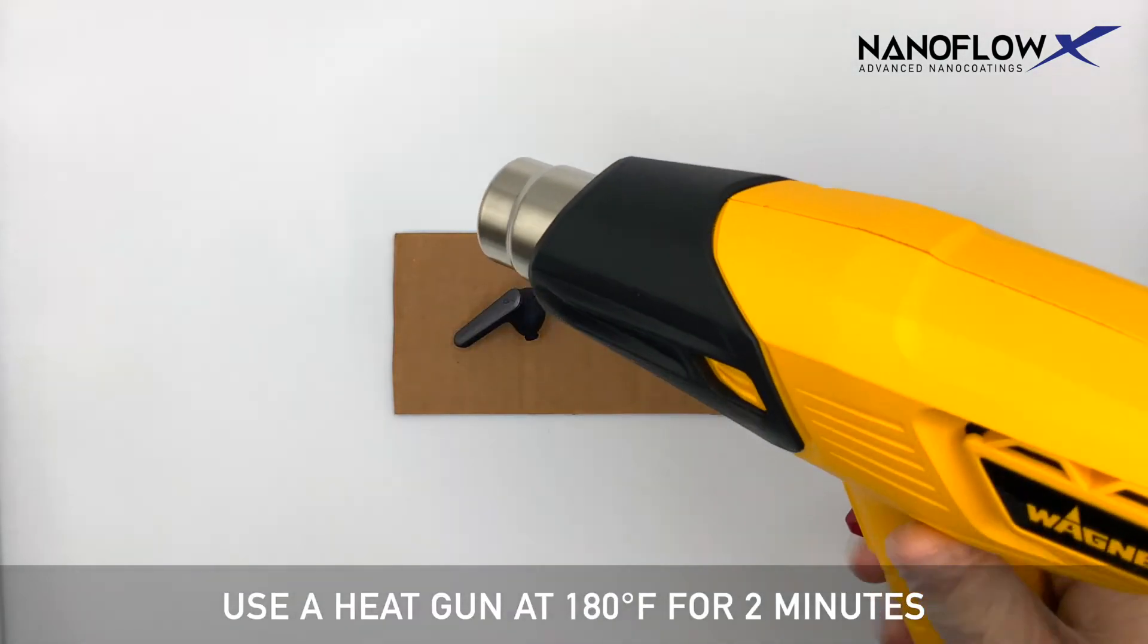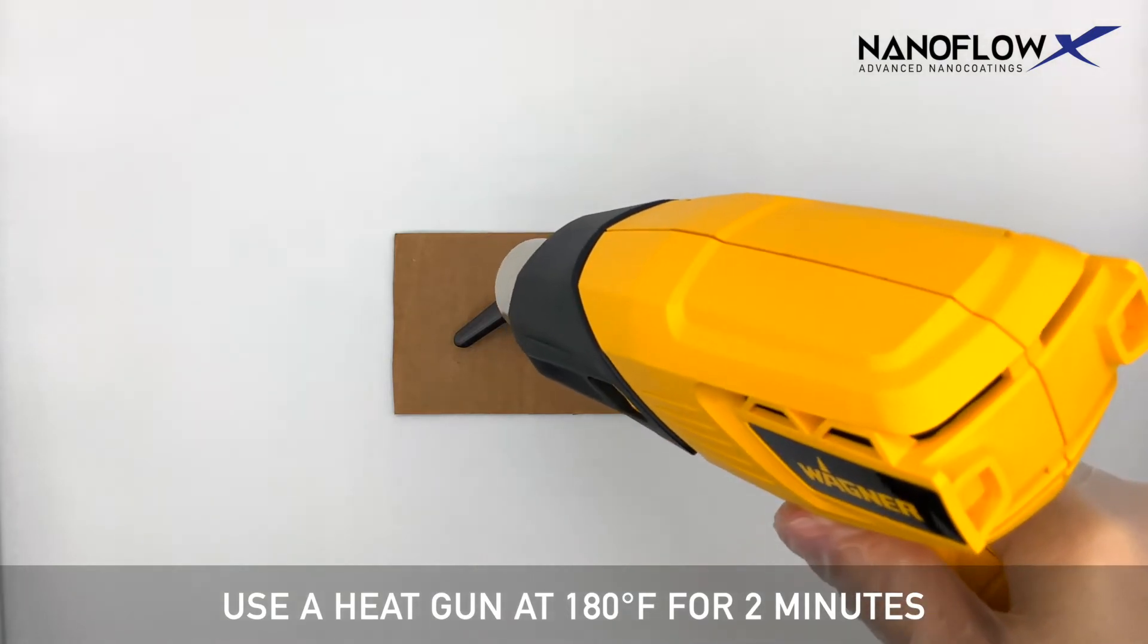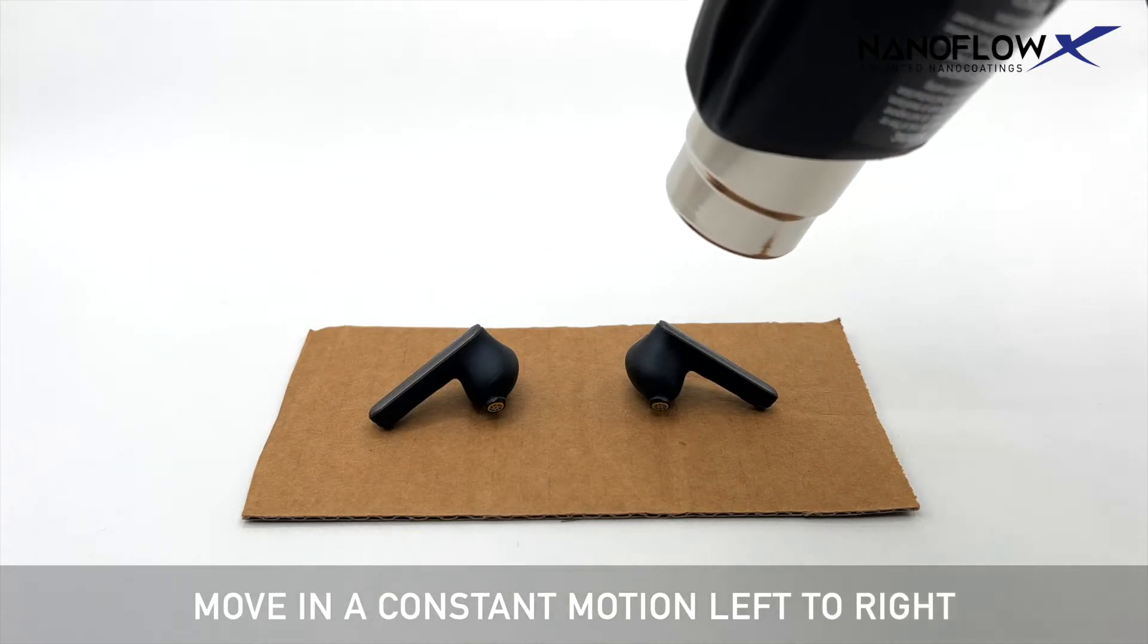Use a heat gun at 180 degrees for two minutes. Move in a constant motion left to right.